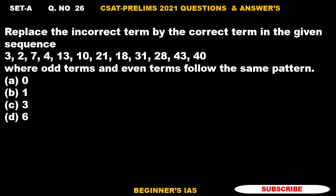18, 31, 28, 43, 40. Here, be careful though. The odd term and even term follows the same pattern and then we will discuss the options.